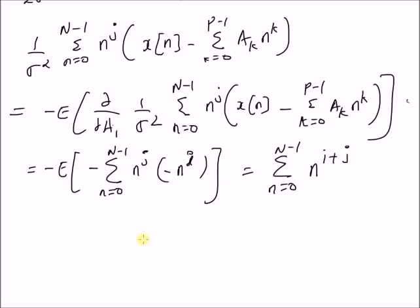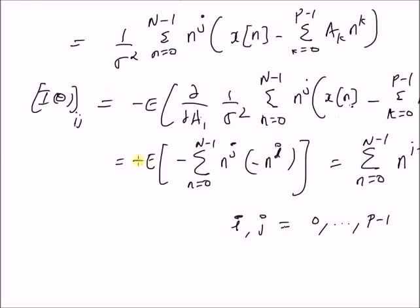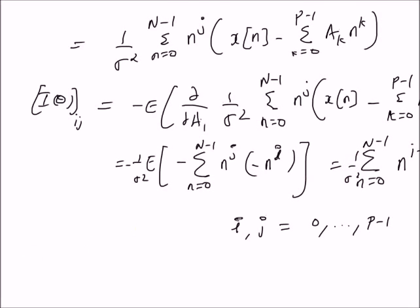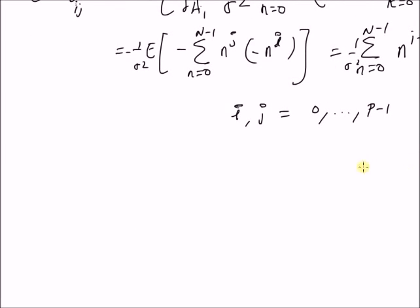Note that the values of i and j range from 0 to p-1, where p is the order of the polynomial, and there is also a factor of 1/σ². Therefore, we can now construct the Fisher information matrix I(θ) as follows.